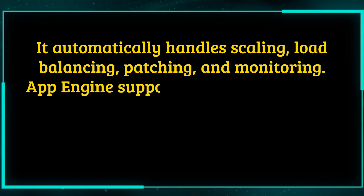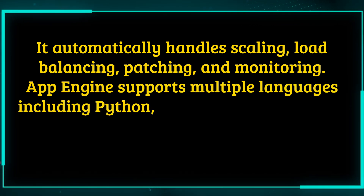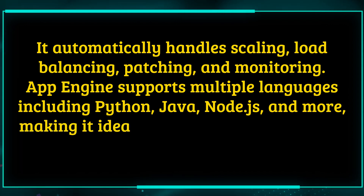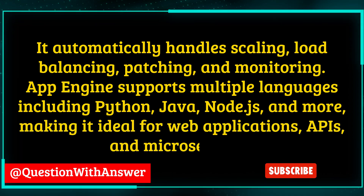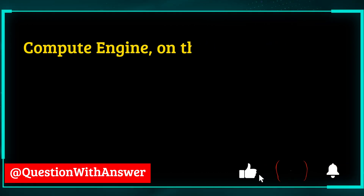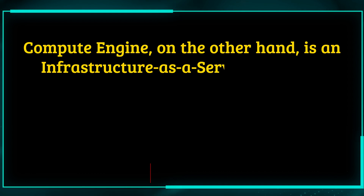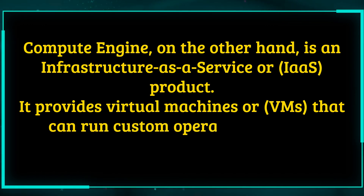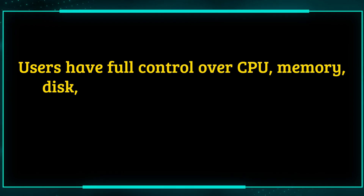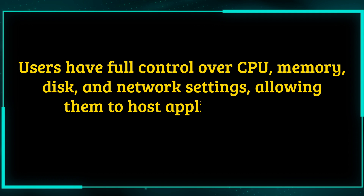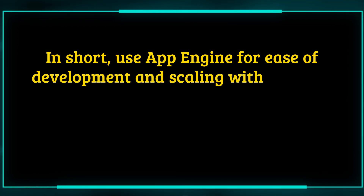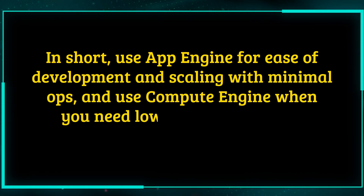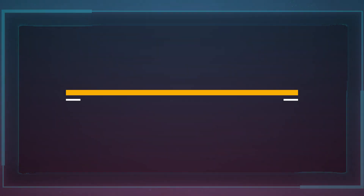App Engine supports multiple languages including Python, Java, Node.js, and more, making it ideal for web applications, APIs, and microservices. Compute Engine, on the other hand, is an infrastructure as a service, or IaaS, product. It provides virtual machines, or VMs, that can run custom operating systems and software stacks. Users have full control over CPU, memory, disk, and network settings, allowing them to host applications with more complex requirements. In short, use App Engine for ease of development and scaling with minimal ops, and use Compute Engine when you need low-level control over your infrastructure.